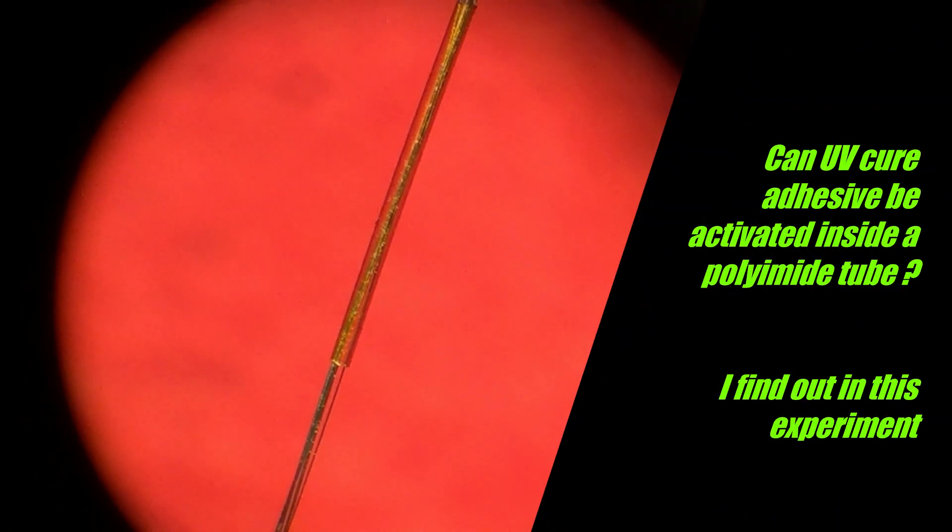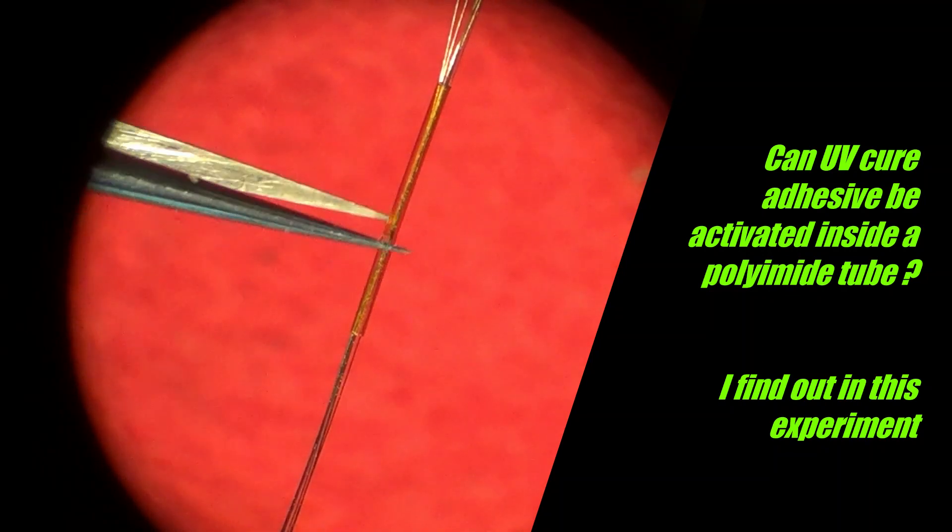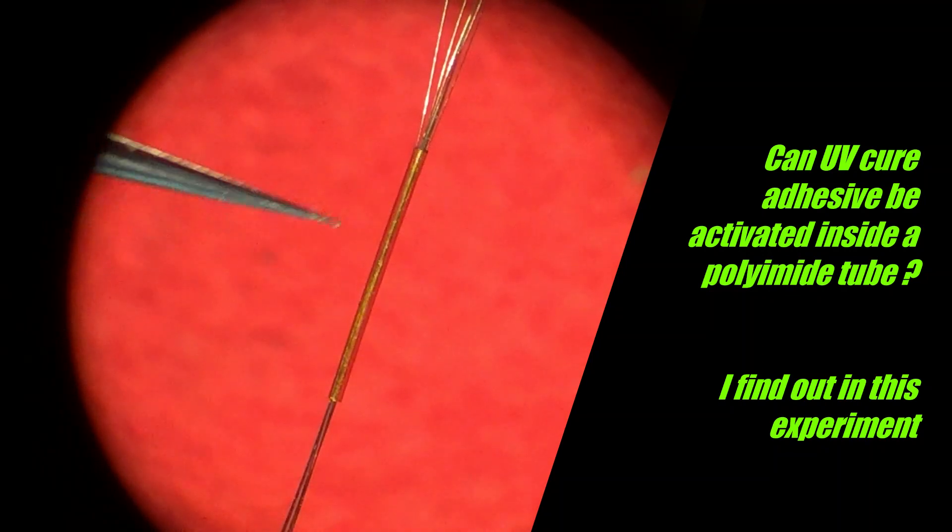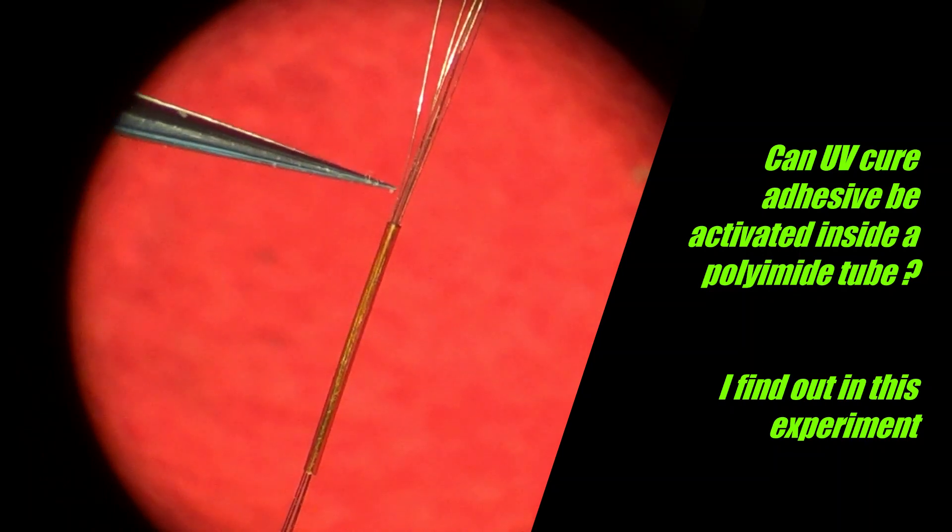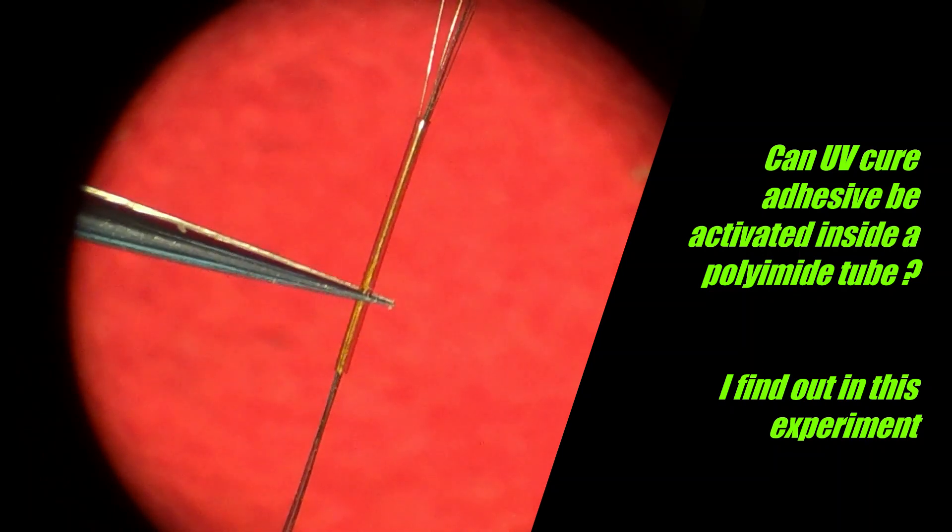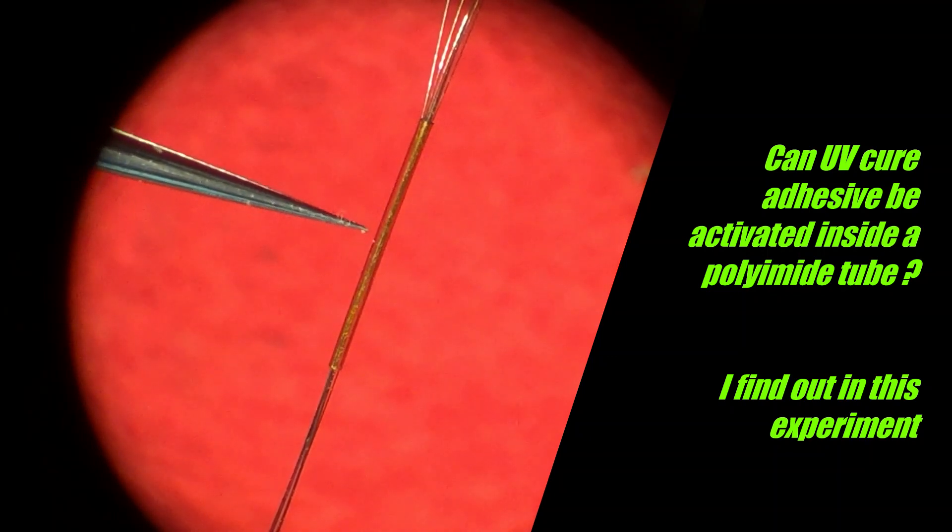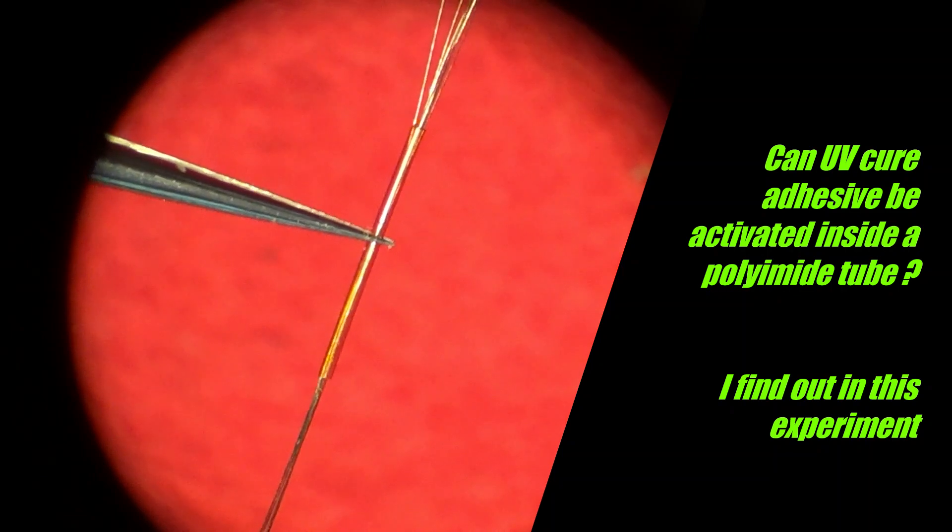So here I'm testing whether my UV cure adhesive will work through this polyamide tubing. I'm going to apply some UV cure to these microwires and then slide the polyamide tubing over it and see if I can get the cure to make effect through the polyamide tubing.